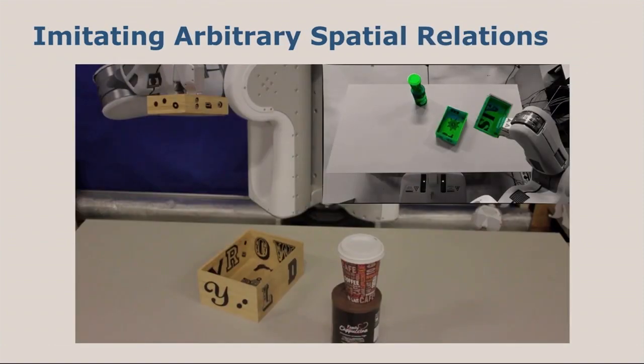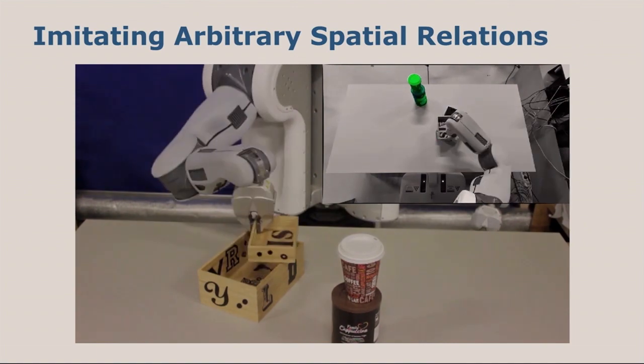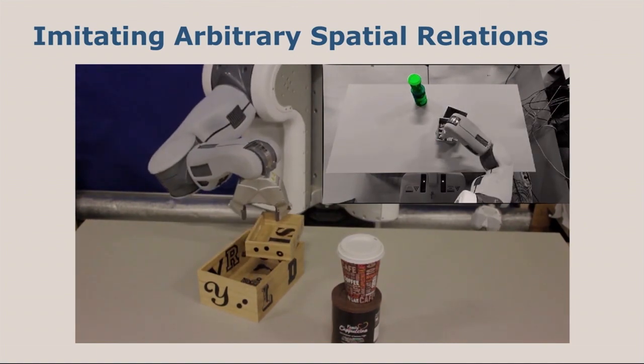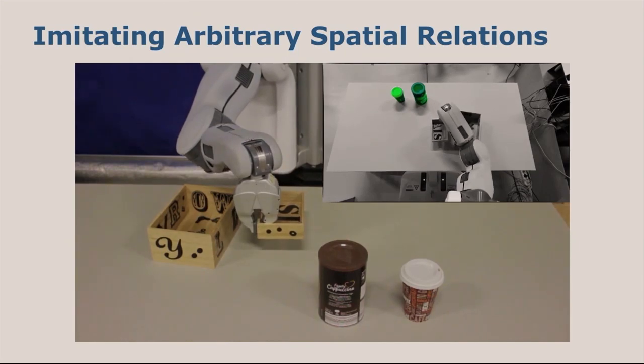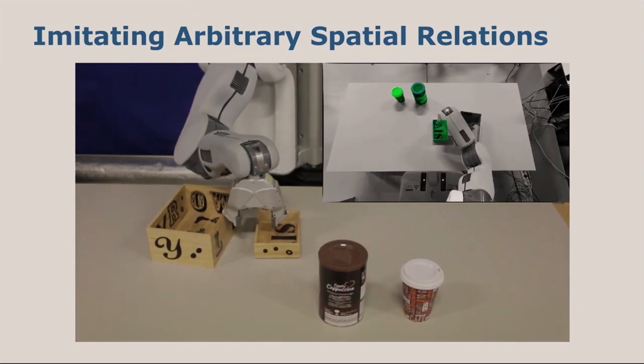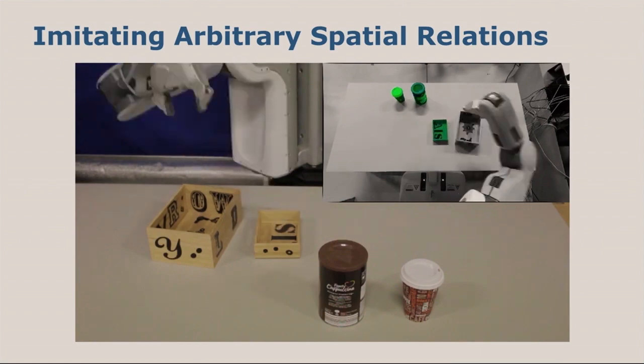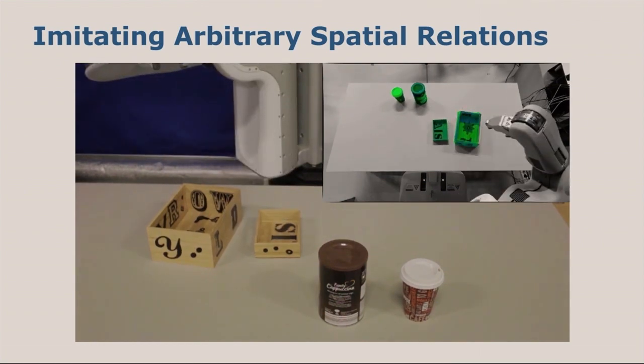With our approach, the robot is able to imitate a demonstrated scene. We demonstrated a scene here, which is on the bottom, the coffee cup and the brown box. The robot should imitate this with the two wooden boxes. As you can see, it successfully does so, even though the shapes of these wooden boxes are completely different than the shapes of the objects in a demonstrated scene. This works for different relations.